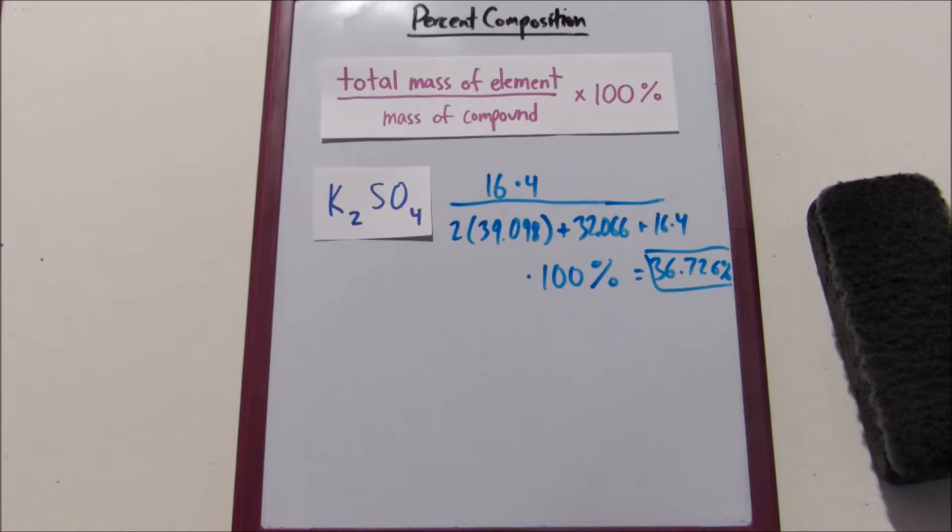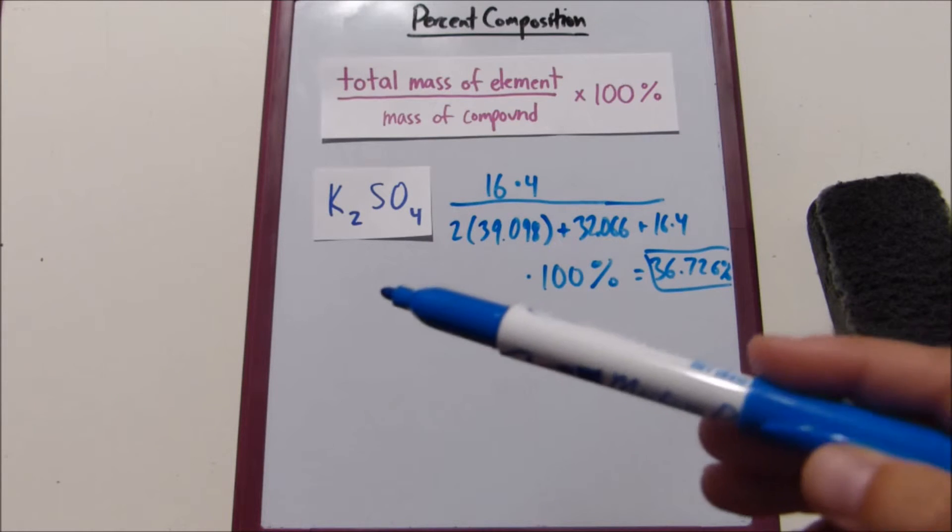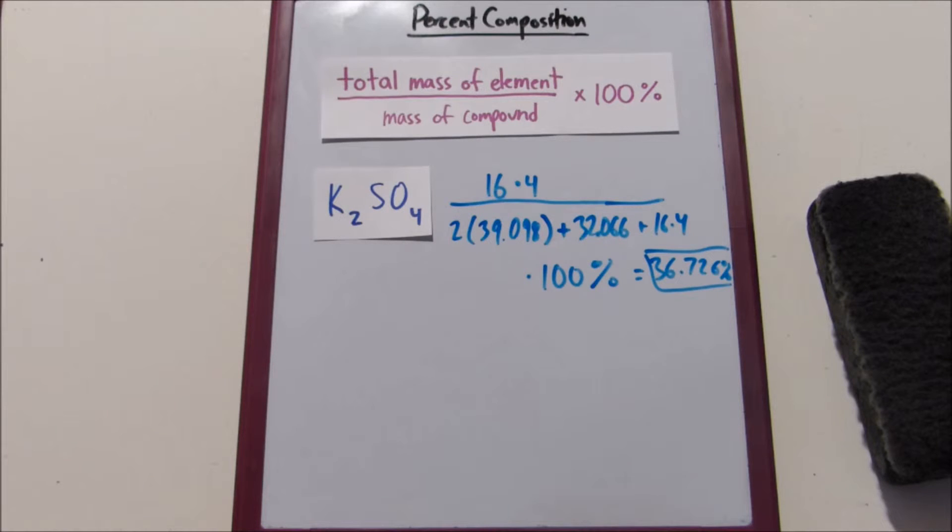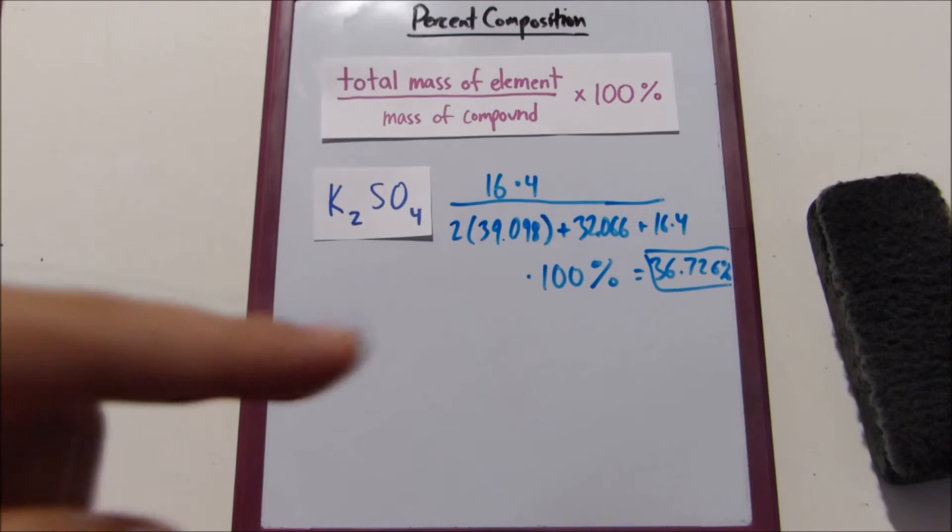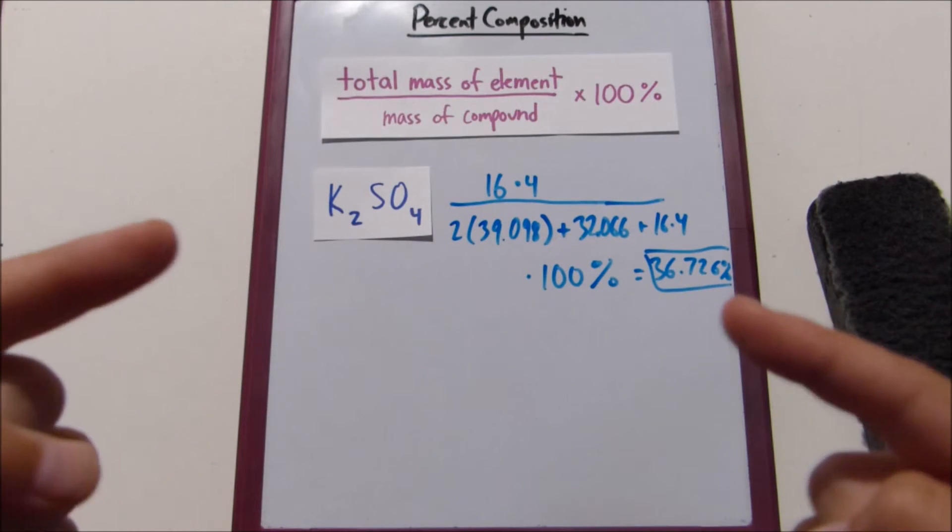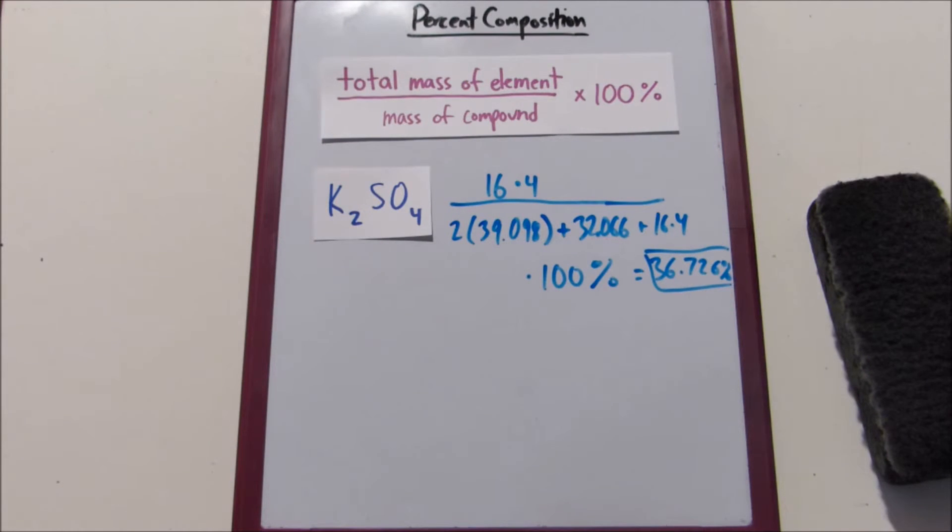Now, if we wanted to, for fun, we could figure out the mass percentage of the other elements in this compound, the potassium and the sulfur. Basically, since it's called percent composition, you would expect that the mass percentage of the potassium plus the sulfur plus the oxygen would make up 100%. It would compose into one compound. So let's do that.